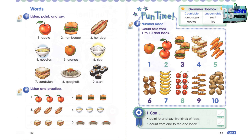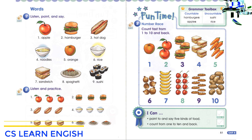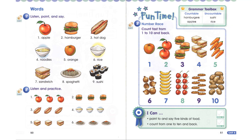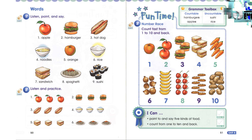Fun Time, Exercise 3: Number Race — count fast from 1 to 10 and back. Are you ready? Let's start. 1, 2, 3, 4, 5, 6, 7, 8, 9, 10, 10, 9, 8, 7, 6, 5, 4, 3, 2, 1.